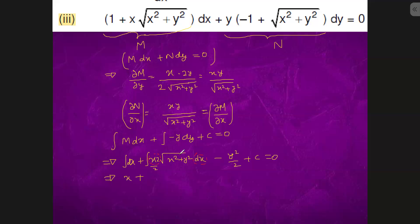So this is dt. This is 1 by 2 integration of t to the power 1 by 2 dt, and here we have already y square by 2 plus c equals to zero.